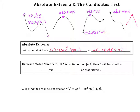What the extreme value theorem says — and think, extreme values, so it's going to be talking about maxes and mins — if you have a function that is continuous on a closed interval, then F will have both a maximum and a minimum. Really an absolute max and minimum. And that's what we're going to be finding.